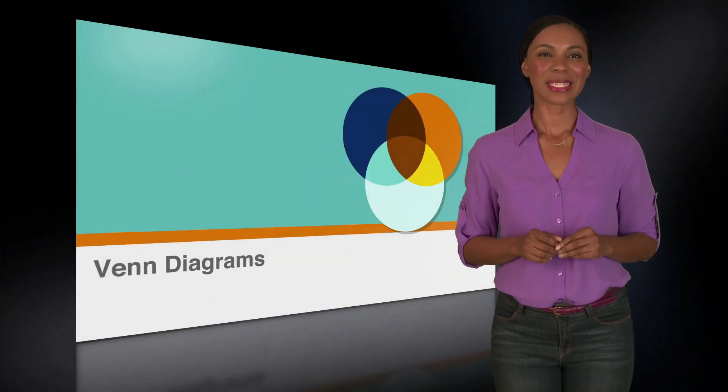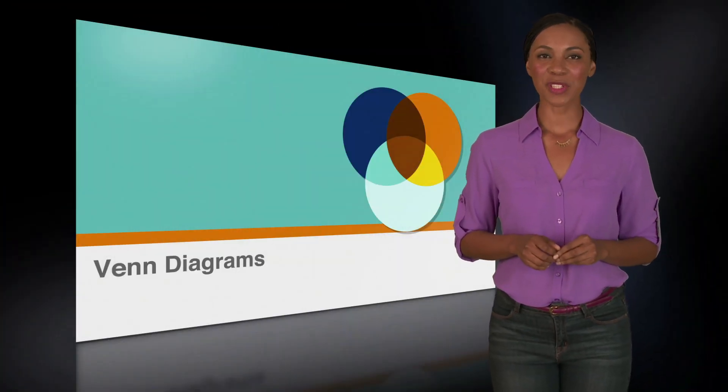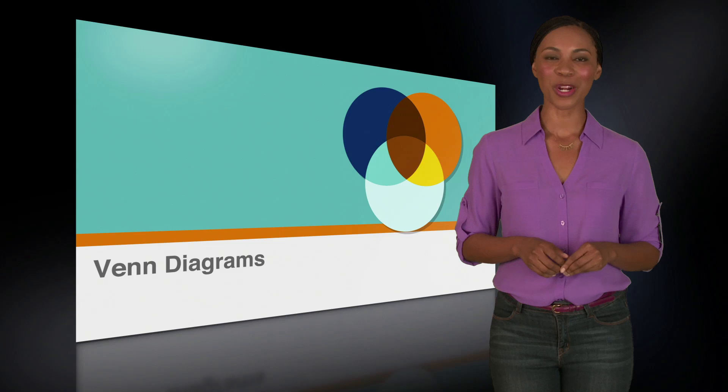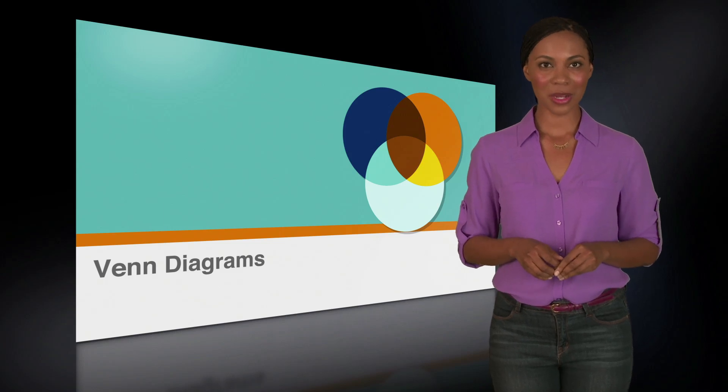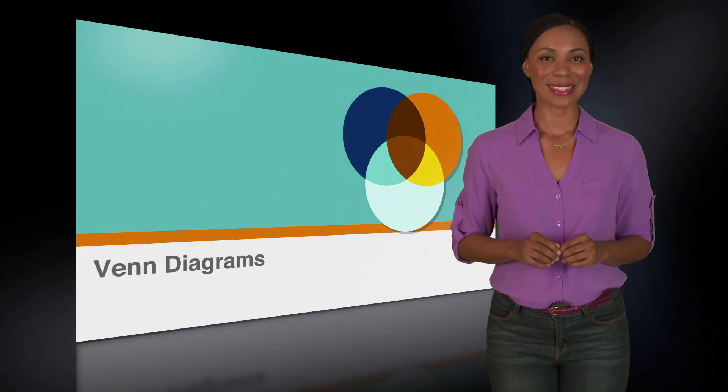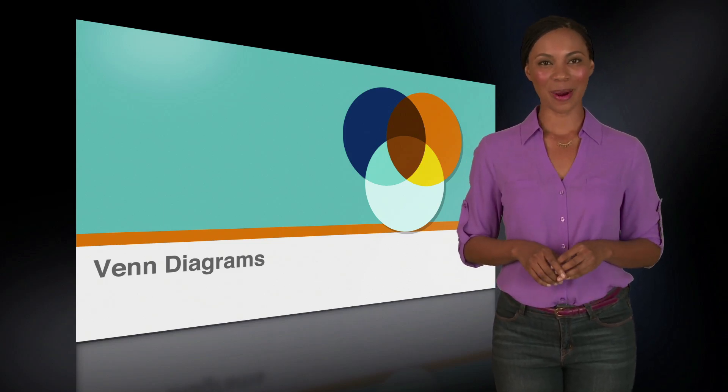So, anytime you see an SAT question that involves two categories and contains the words both, neither, or total, it's a good idea to set it up as a Venn diagram problem.